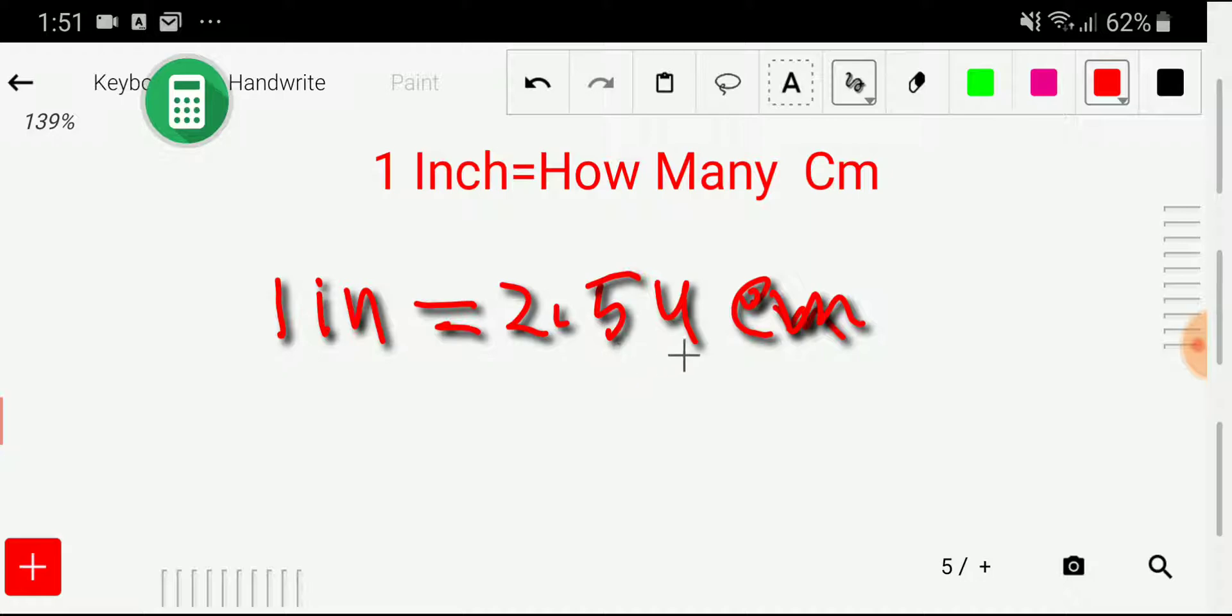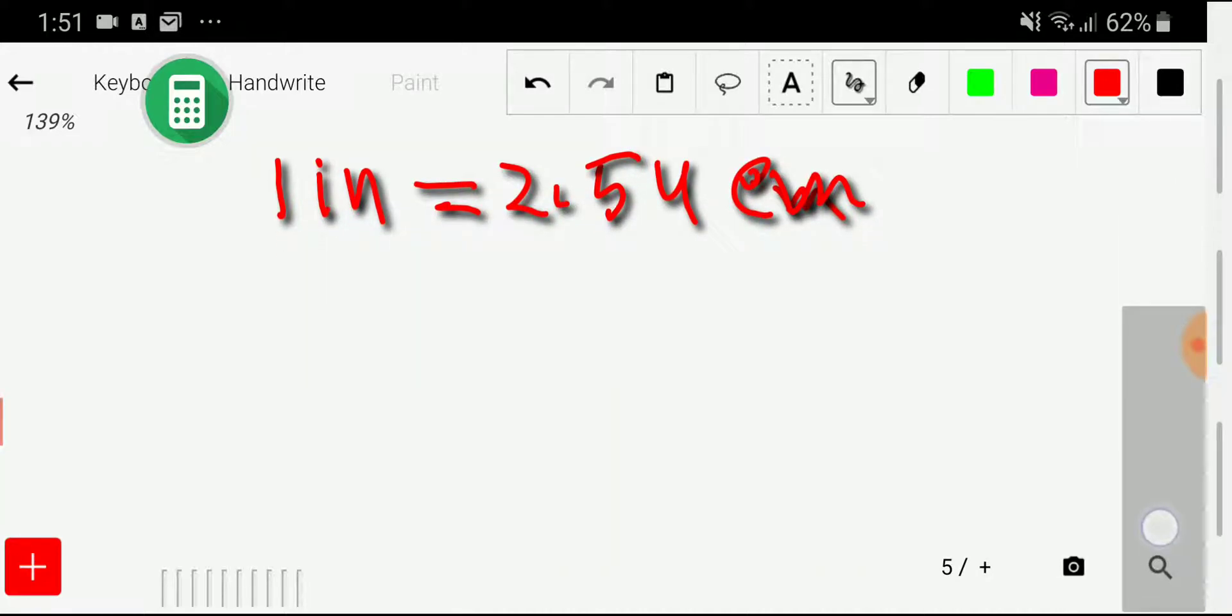One inch equals 2.54 centimeters. This is the basic equivalence between inch and centimeter. Let me take an example: convert 20 inches...